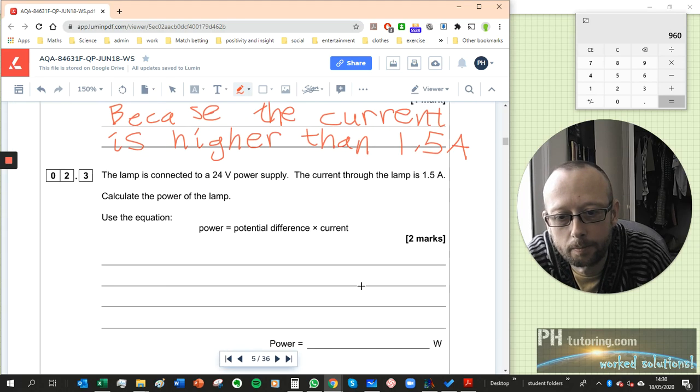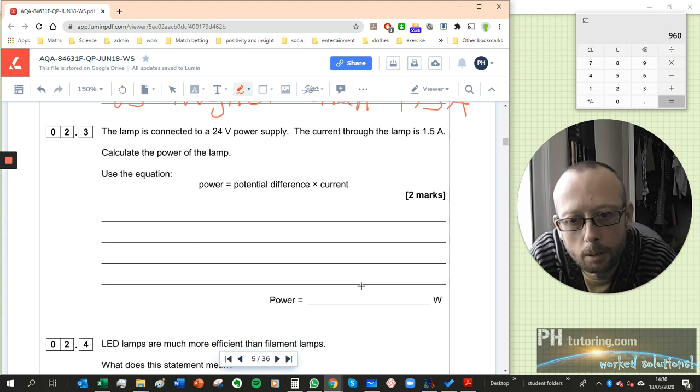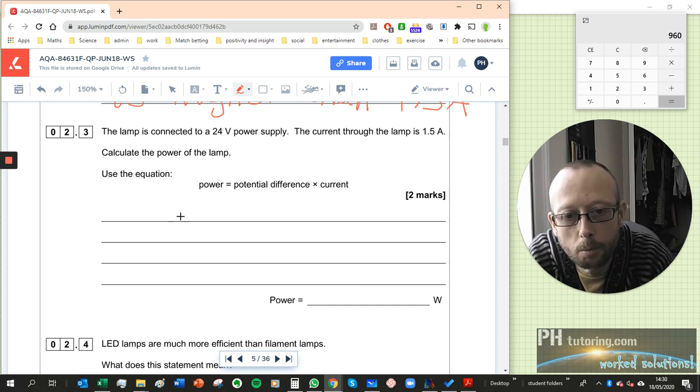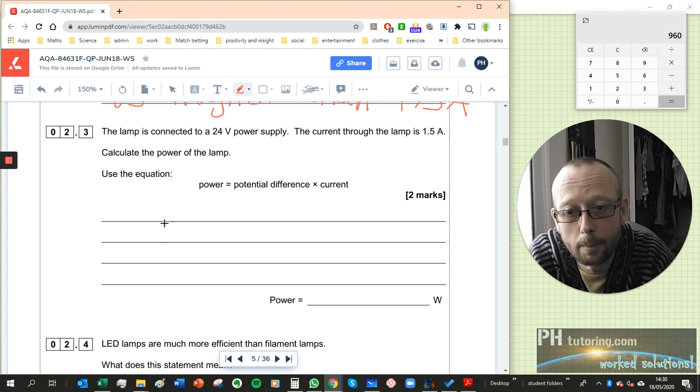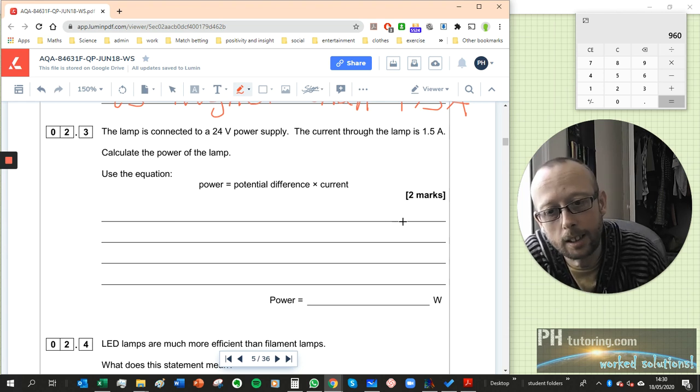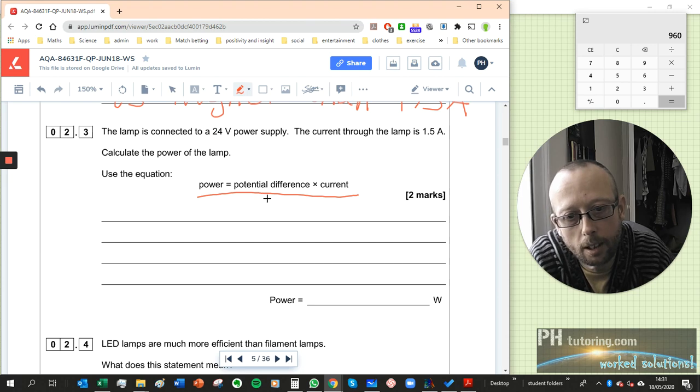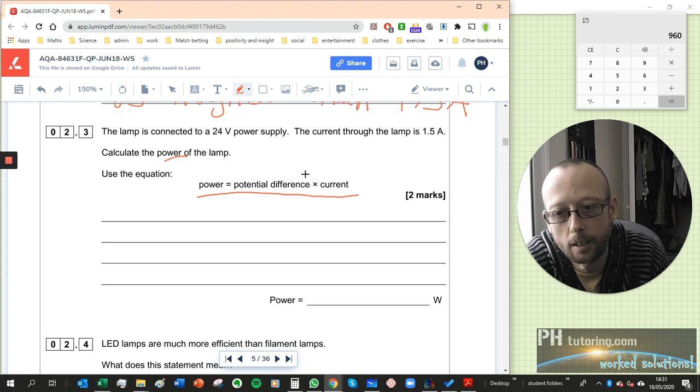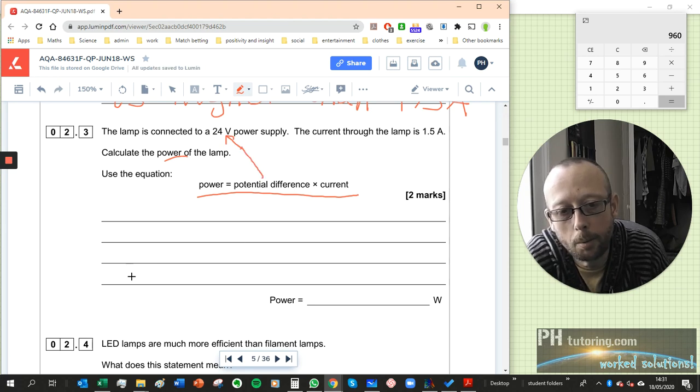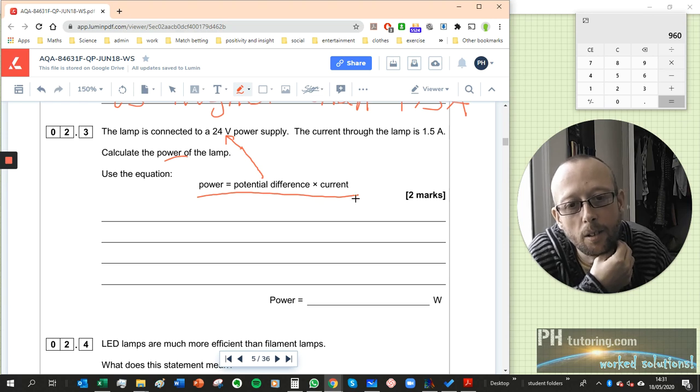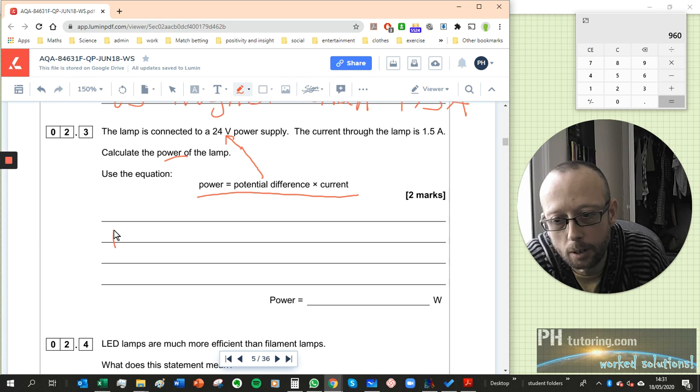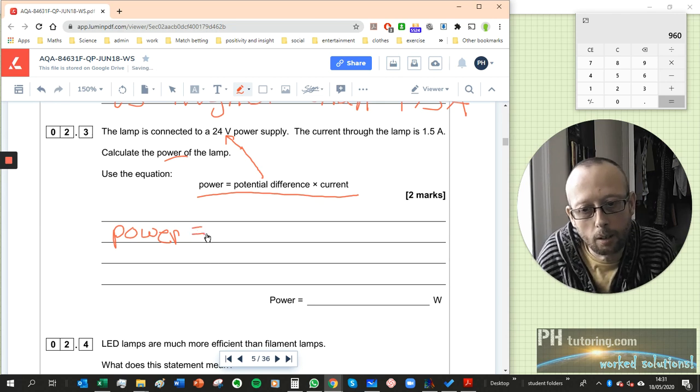All right, so the lamp is connected to a 24 volt power supply, the current through the lamp is 1.5 amps. Calculate the power of the lamp. Oh these questions are really easy. A lot of people are so scared of maths and physics, but they've just given you the equation. They ask you to calculate the power and then they tell you that the power is equal to the potential difference times the current. They tell you the current, and well you would have to know that V is potential difference, but you can probably guess couldn't you, because they've given you the current. So really, if you are a little bit scared of these maths questions at the moment, I really recommend that you get over that fear.